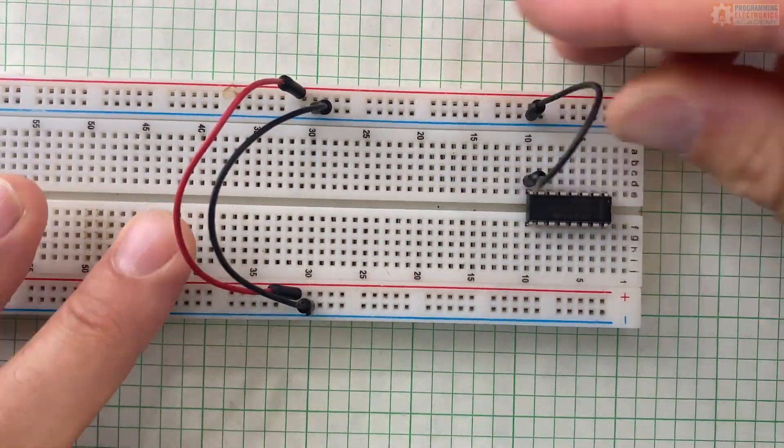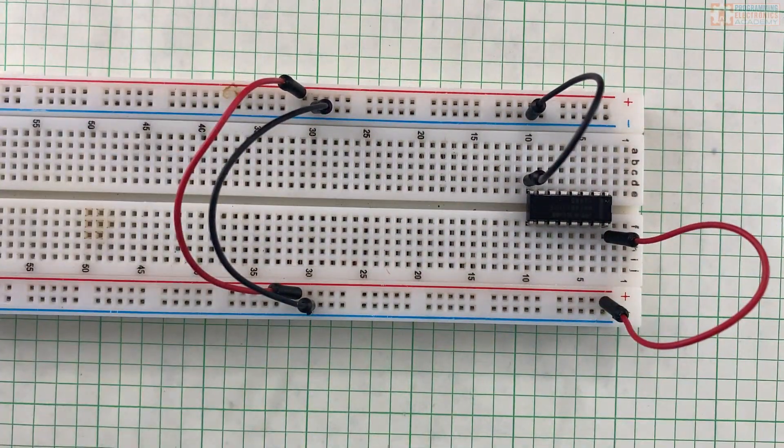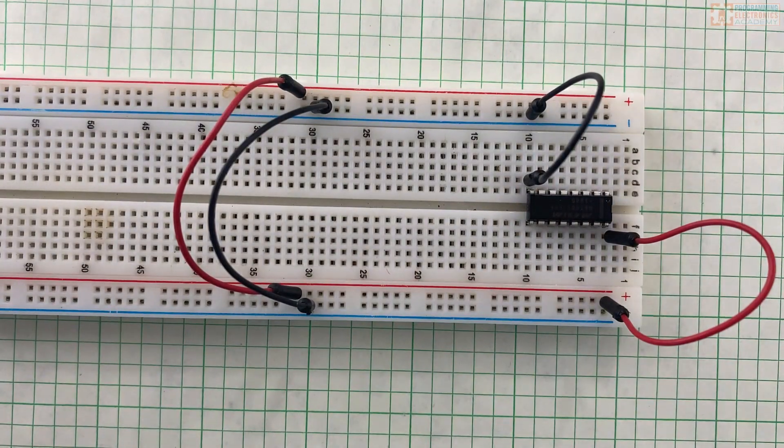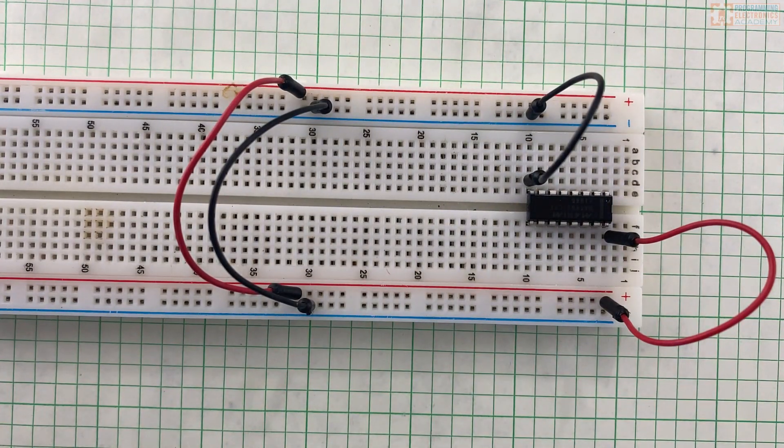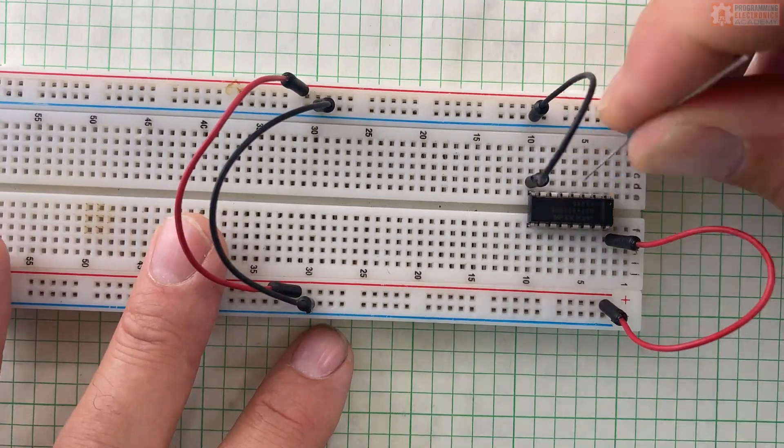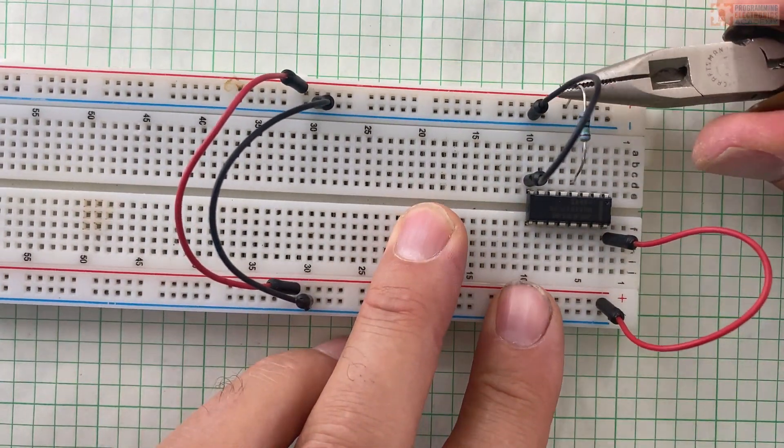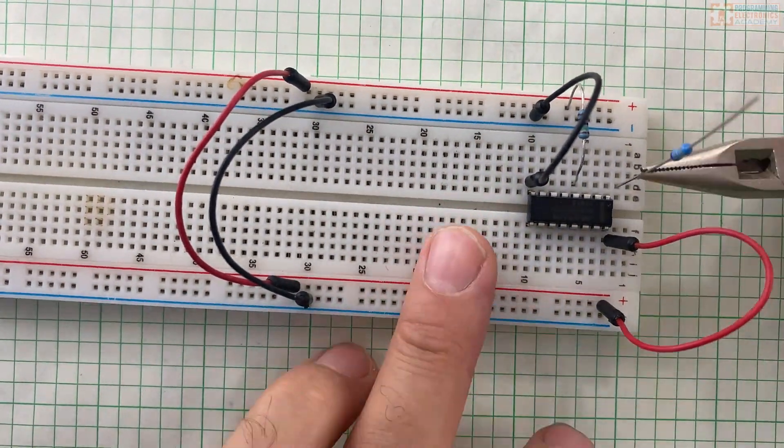I set up the power rails and added the multiplexer chip. It's a MAX 4617 CPE high-speed low-voltage CMOS 8-to-1 analog multiplexer. Man, that is a mouthful. We can just say MUX for short.